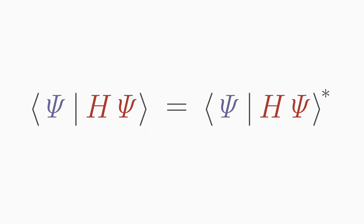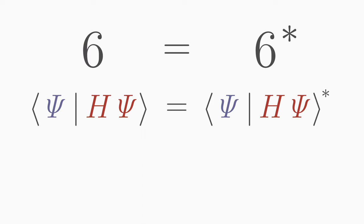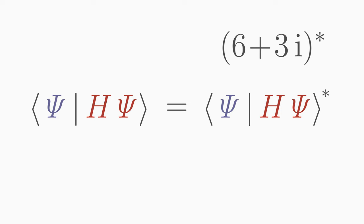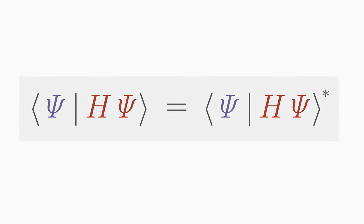This is a requirement that is only satisfied by a real number. As you know from mathematics, when we complex conjugate a real number, it remains unchanged. But if we complex conjugate a complex number, then the sign changes. So by this requirement, we exclude complex mean values.